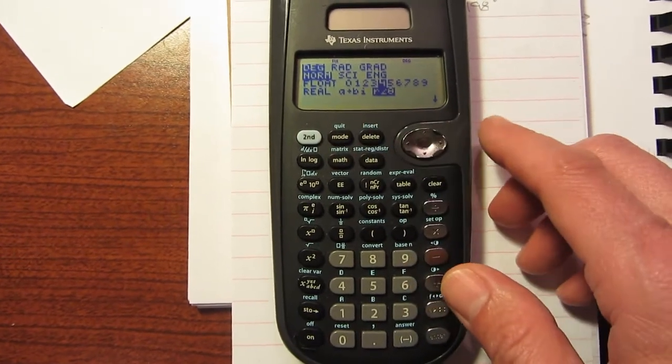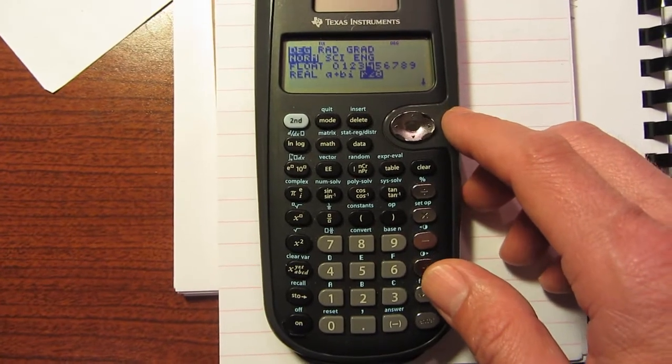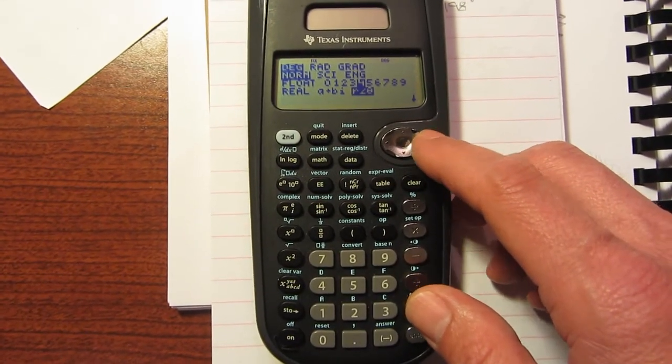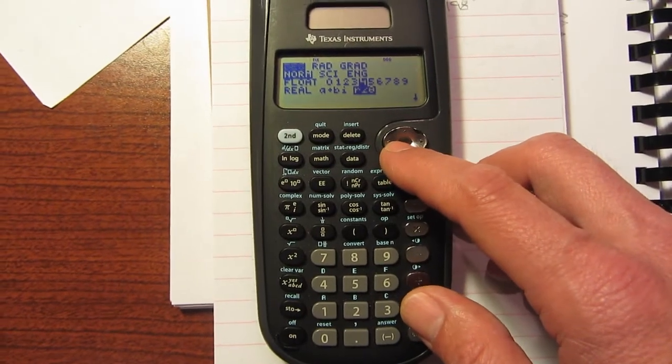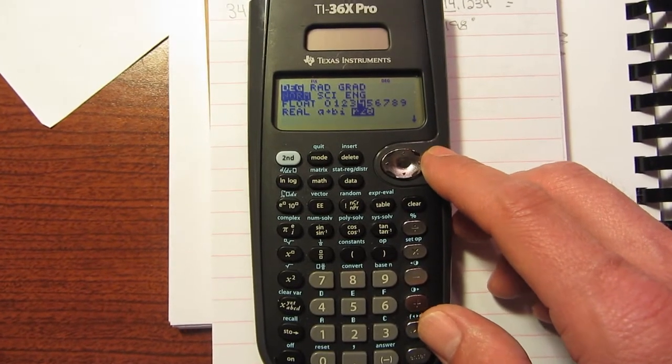When we hit that, that will bring us to the mode screen. You can see where it's flashing, that is where we can select. I don't think I've ever not had it in that. I always usually kept it with normal. That's what we all kind of think of in regular numbers.